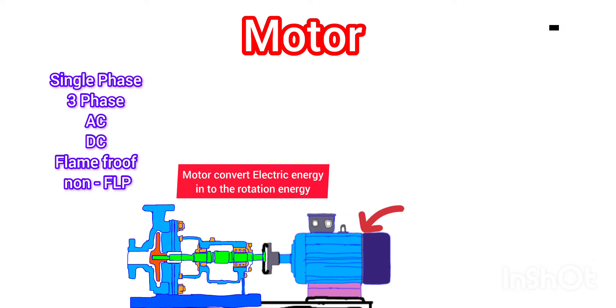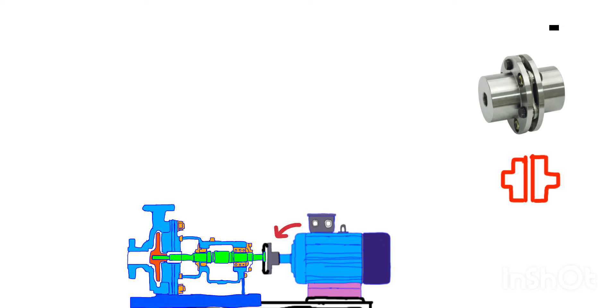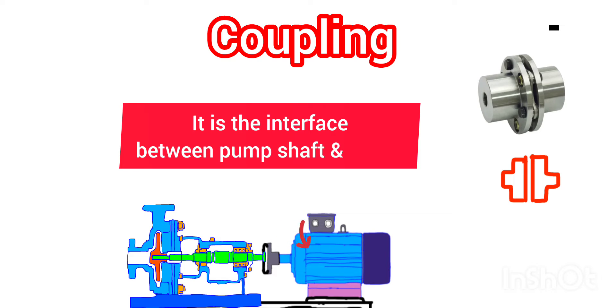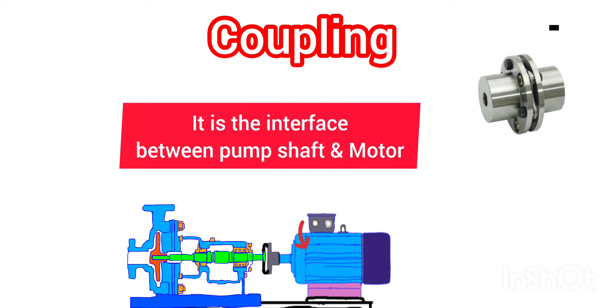The second component is the coupling. You can see the image of the coupling — it is a mechanical device. The role of coupling is to act as an interface between the motor and the pump shaft. It provides the connection between the motor and shaft, and transfers the rotation from the motor to the shaft.